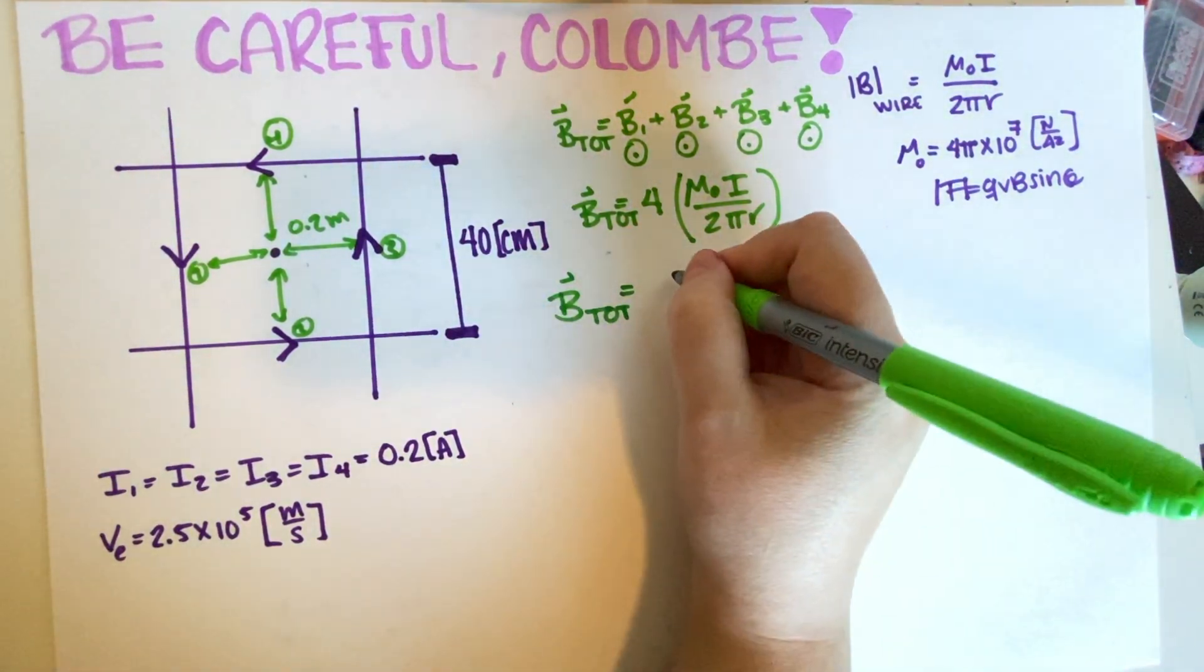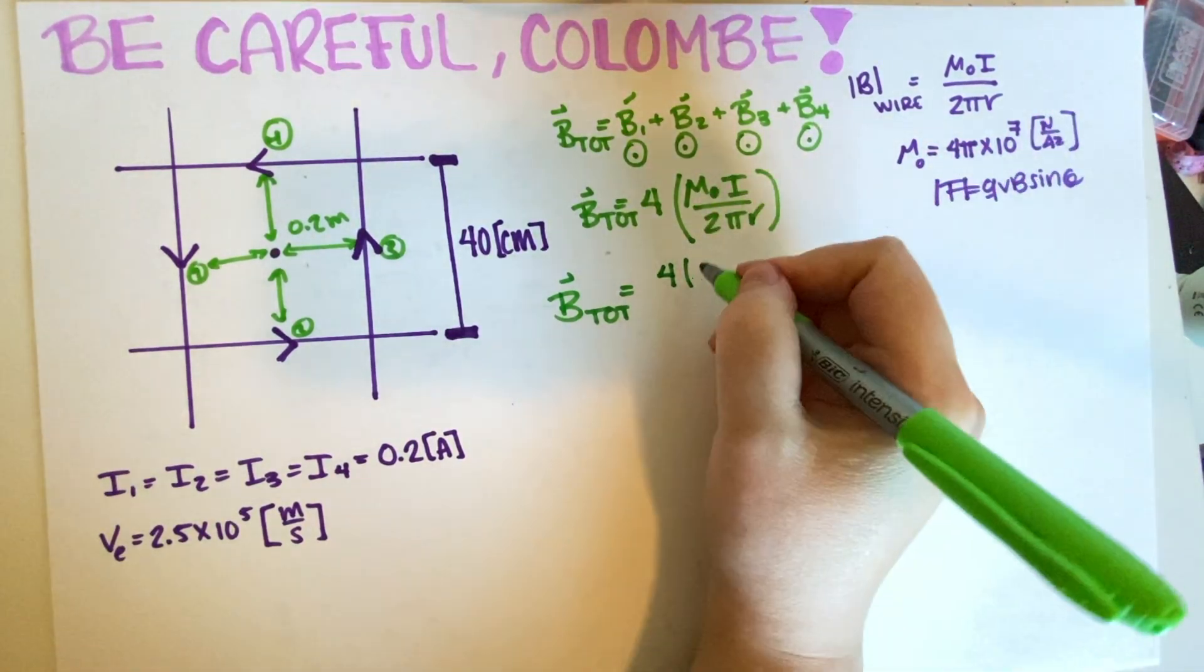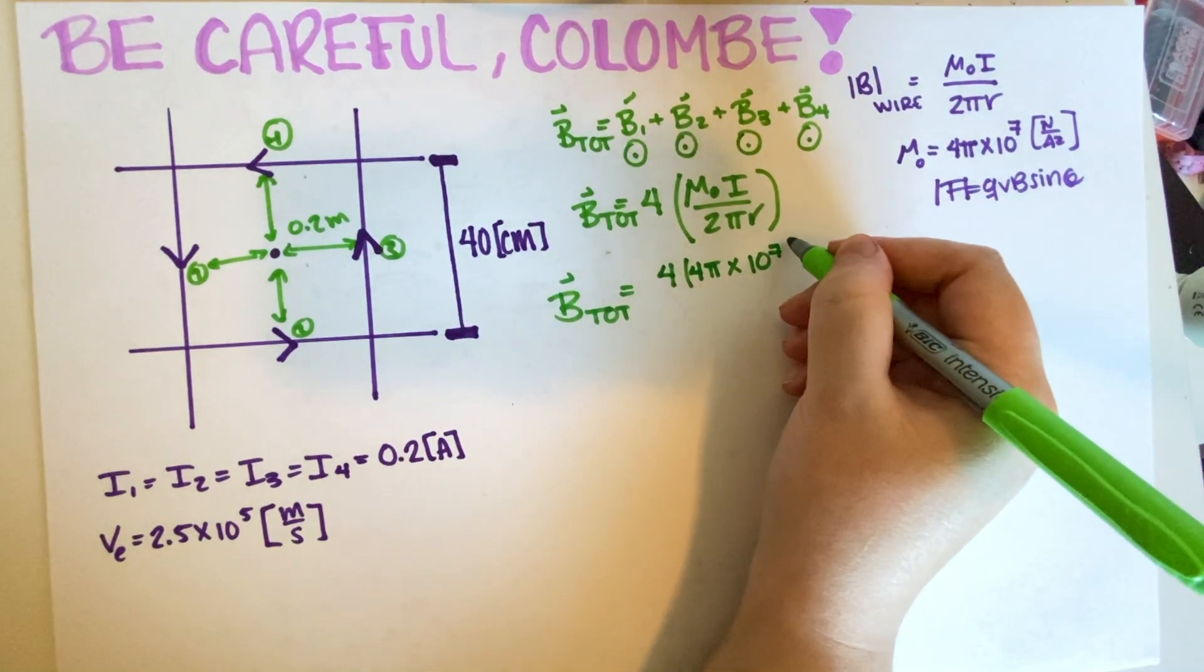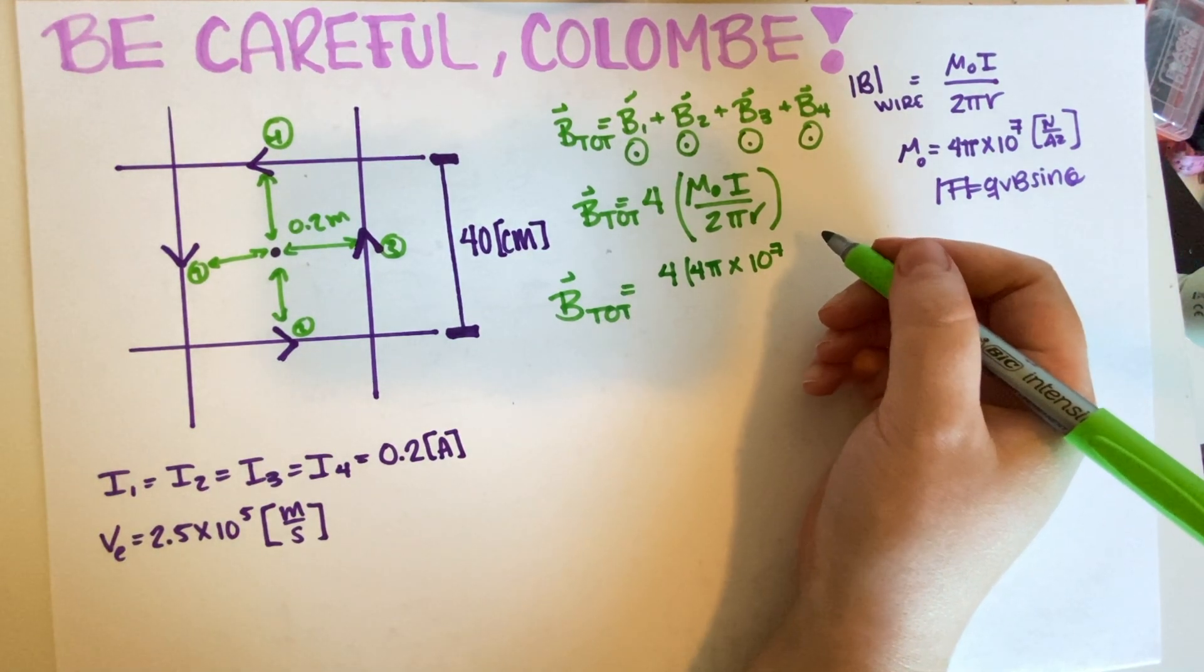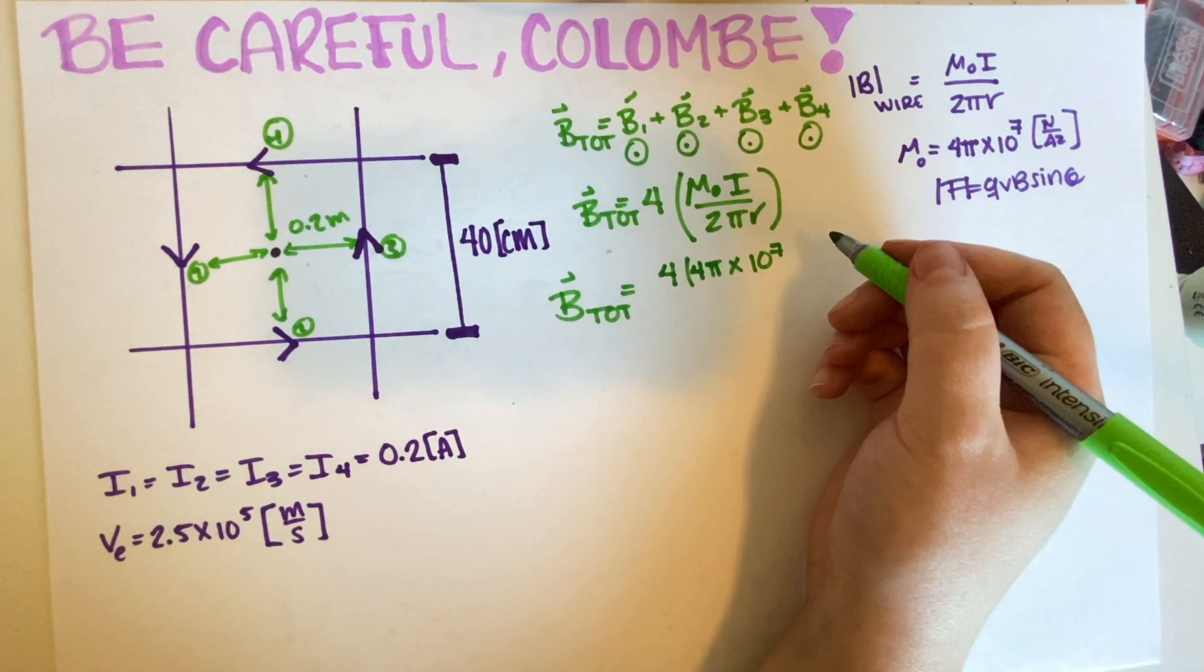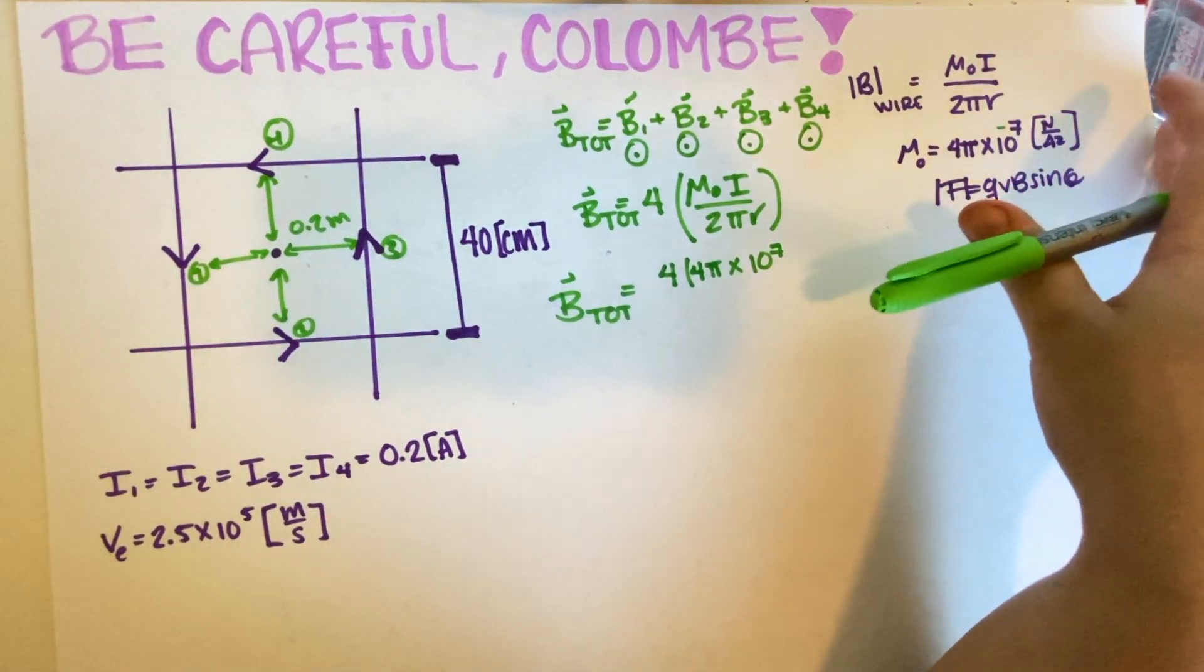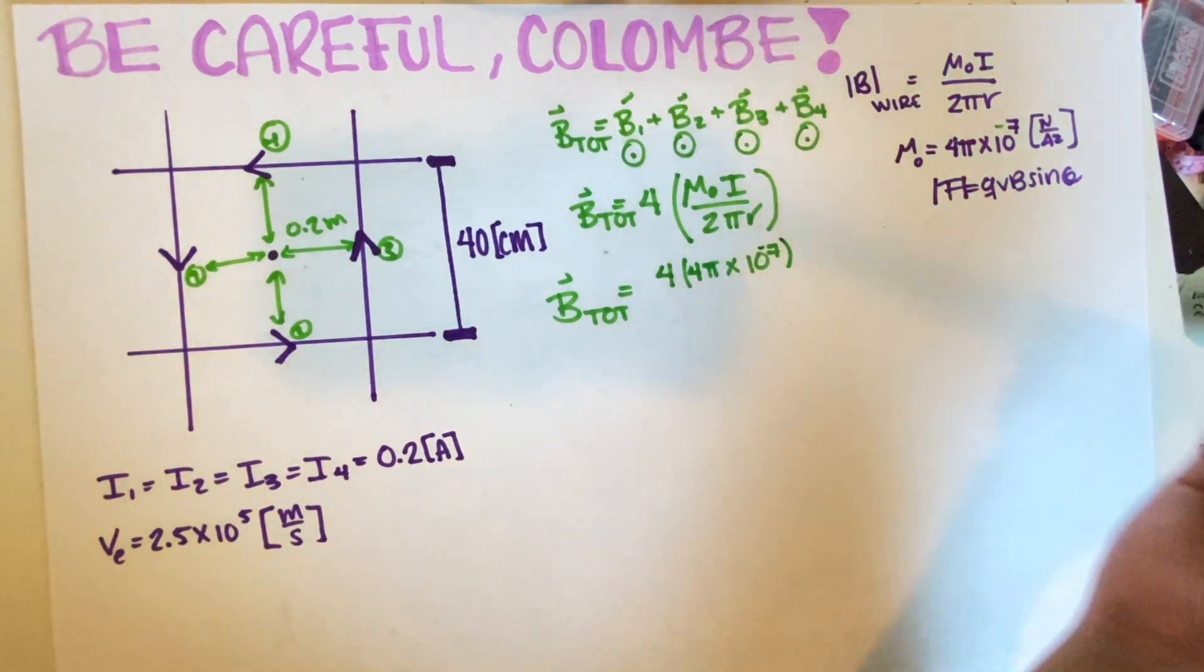So this is going to be four and then mu naught is four pi times 10 to the negative seven. Did I just write that wrong? Oh, what do we have on the quiz? Yes. So this is negative seven. If you want the PDF for the quiz, by the way, they are in the description of this video.